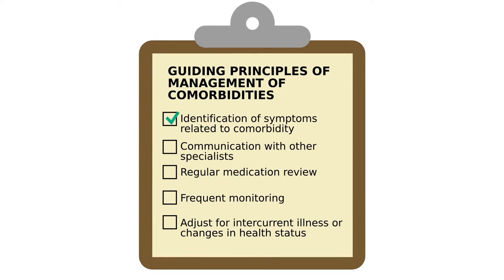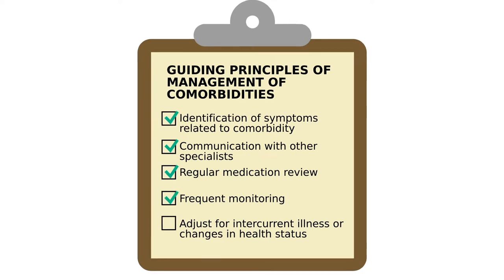Identify symptoms that may be related to comorbidity. Communicate with other specialists in the circle of care. Implement regular medication review and reconciliation. Increase frequency of monitoring. Adjustments may be needed for intercurrent illness or changes in other comorbidities.